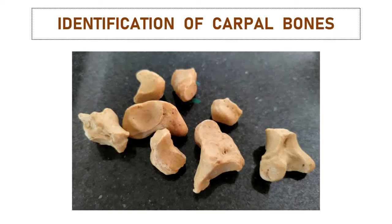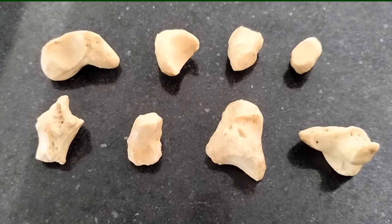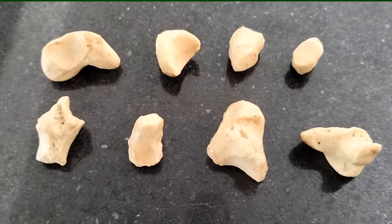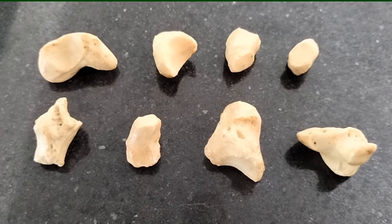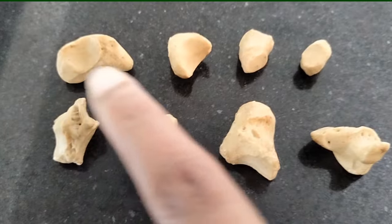Welcome to my demonstration video in which we are going to learn how to identify carpal bones. Carpal bones are 8 in number. They are situated at the wrist region of the upper limb. They are arranged in two rows — four in the proximal row and four in the distal row.